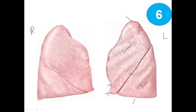On the right lung, we again have the apex and the base. Here is the superior lobe, and on the downside is the middle lobe, and here is the inferior lobe — three lobes in total. The right lung has two fissures: the horizontal fissure and the oblique fissure.